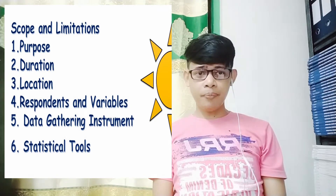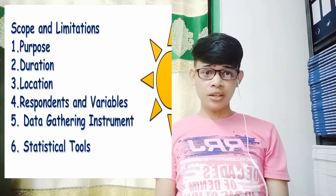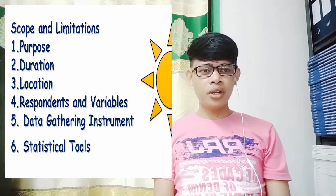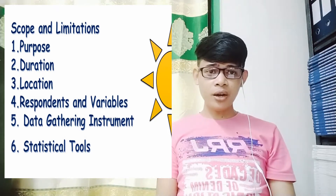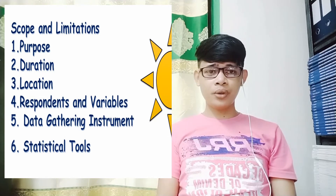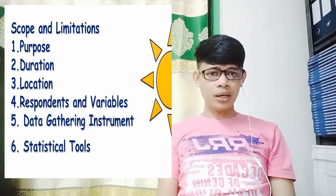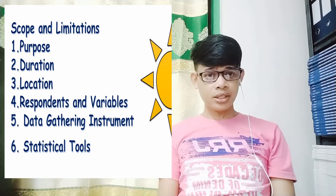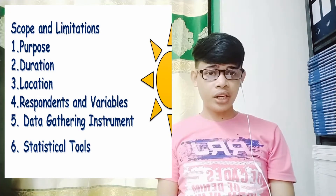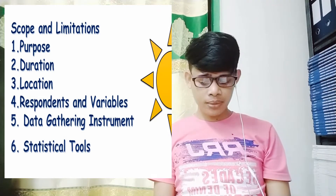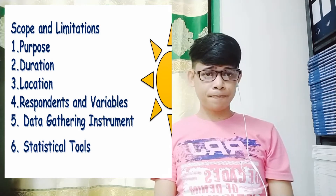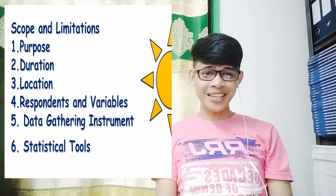Usually when you write the scope and limitations of your study, you need to include the following: first, the purpose or aim of your research, usually in the first paragraph; second, the duration — how many weeks or months it will take to conduct your paper; third, the location of your study — where it will take place; fourth, who are the respondents; fifth, what are the variables included; and sixth, the data gathering instrument and statistical tools used.